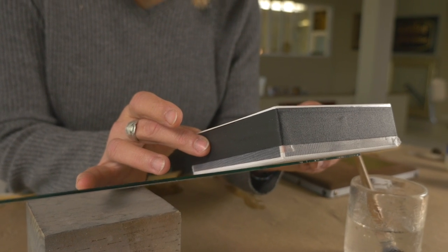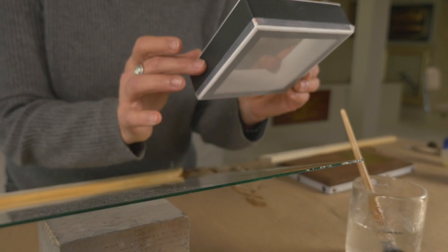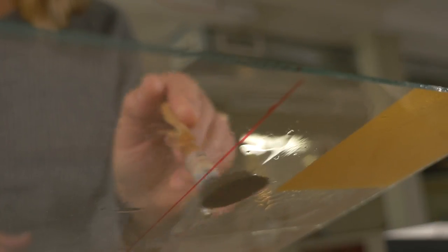When it is almost touching, the sheet of gold leaf will be pulled onto the surface. Perfect placement each and every time.